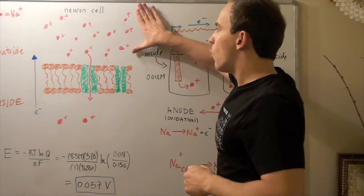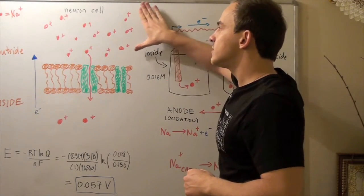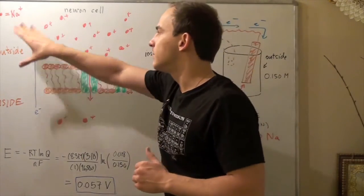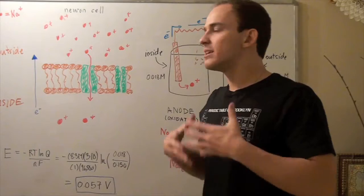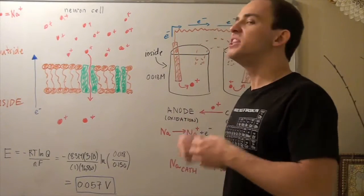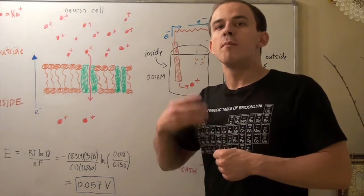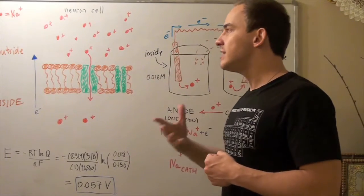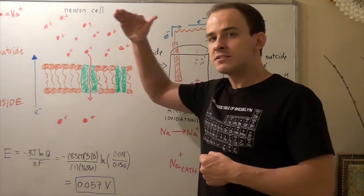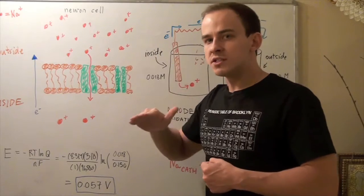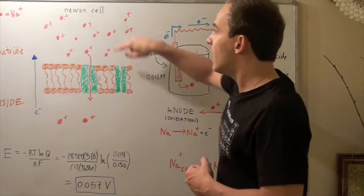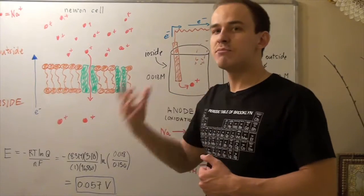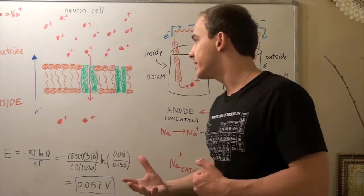At this point, we say there's a high concentration gradient on the outside. The concentration gradient simply comes from the number of molecules — the more molecules there are, the higher the concentration gradient. Things tend to move from a high concentration gradient to a low concentration gradient. So ions will want to move from the outside to the inside due to a chemical or concentration gradient.